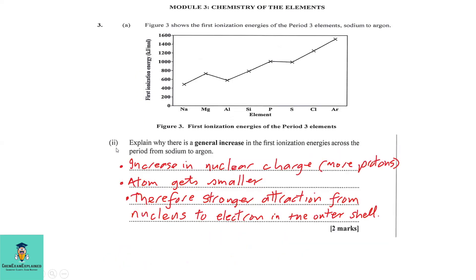Part 2: Explain why there is a general increase in the first ionization energies across the period from sodium to argon. Well, the first reason is that there is an increase in the nuclear charge, that is more protons as you go across the period from sodium to argon. 2. The atoms get smaller, therefore a stronger force of attraction between the nucleus and the electrons on the outer shell.